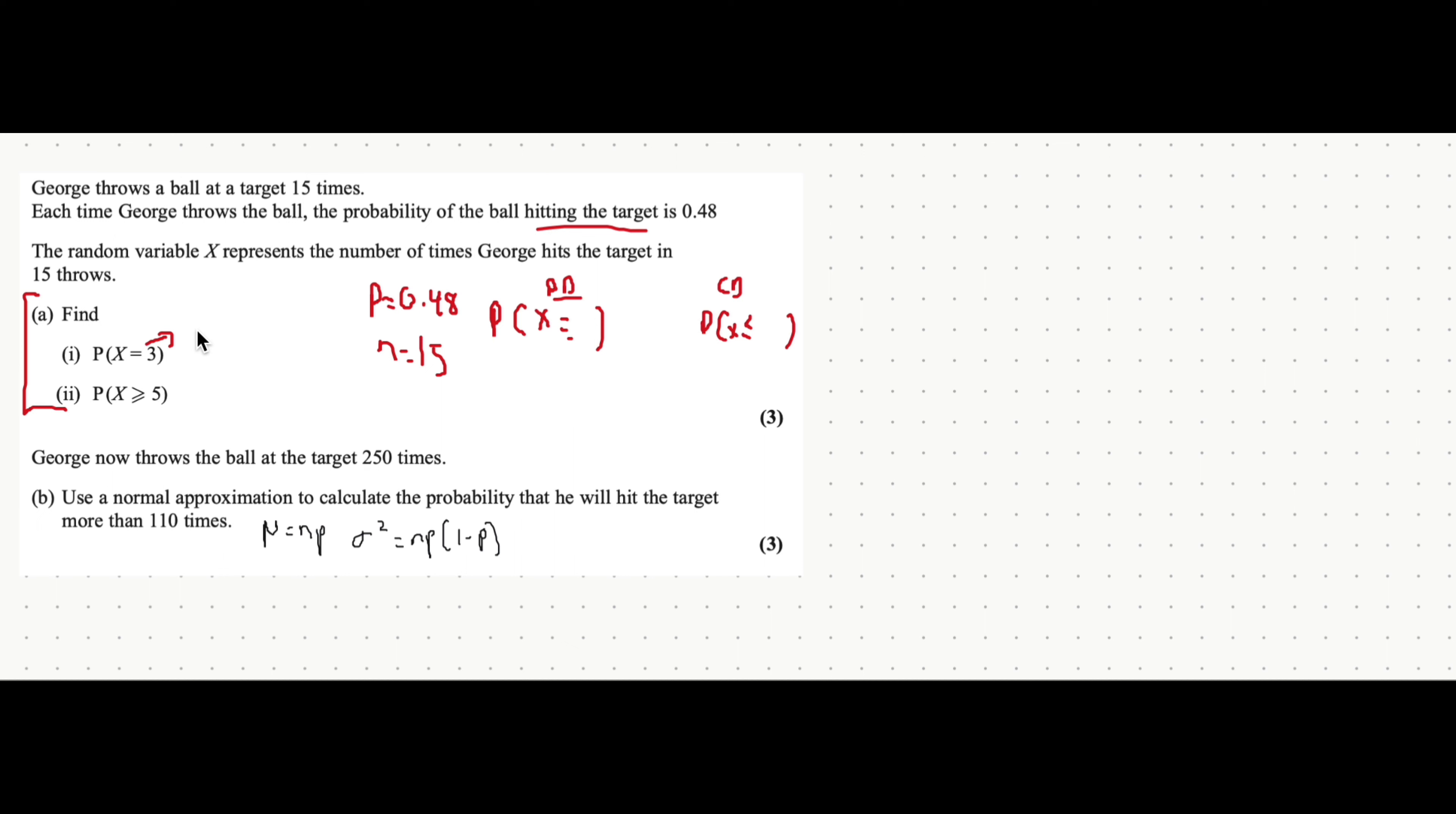I then get three options, X, N, and P. X is what it's equal to for the binomial PD function, which is 3. N is the sample size of 15. And P is the probability that I mentioned there. And that gets you the value.